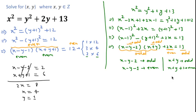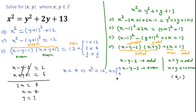So one possible pair is (4, 1). However, this is not the only possible pair because negative values also exist. Since x appears squared in the equation, x equals minus 4 gives the same result. So we can also write the pair (minus 4, 1).